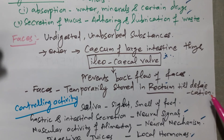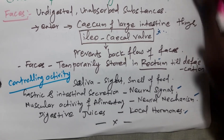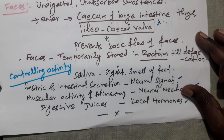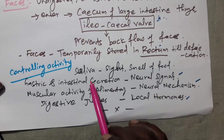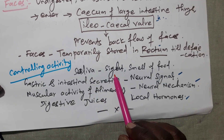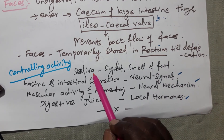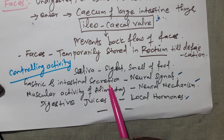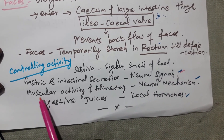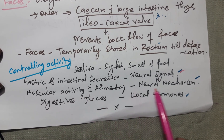This digestion activity is controlled as follows: saliva secretion is controlled by seeing or smelling the food material, which automatically triggers saliva secretion. Gastric and intestinal secretions are controlled by neural signals. Muscular activity of the alimentary canal is also controlled by neural mechanisms, and digestive juice secretion is controlled by local hormones. Students, I hope you understand this concept. Note down all the points and remember them for tests and revisions. Please subscribe to our channel and write comments. Thank you for watching.